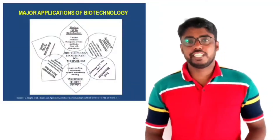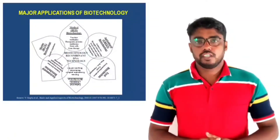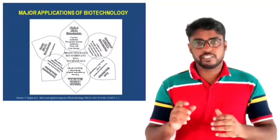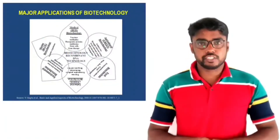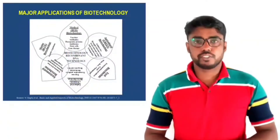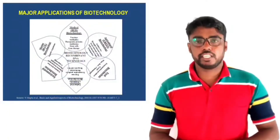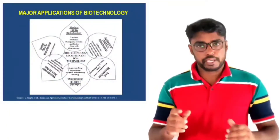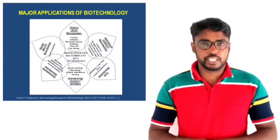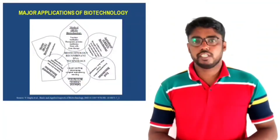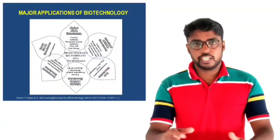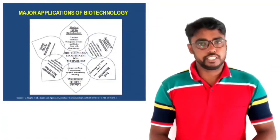Now we can see the different areas of biotechnology. Biotechnology applied in the medical field is known as medical biotechnology. The application of biotechnology in agriculture is known as agricultural biotechnology. Application in food is known as food biotechnology. Application in industry is known as industrial biotechnology. Application in the environment is known as environmental biotechnology. Application in marine is known as marine biotechnology. In almost every field we can see the application of biotechnology, and we will see each area in detail.